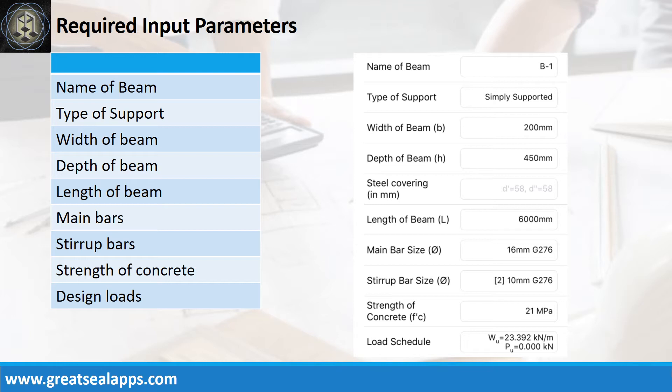Enumerate input parameters required. Name of beam: B1. Type of support: simply supported. Width of beam: 200 mm. Depth of beam: 450 mm. Length of beam: 6000 mm. Main bars: 16 mm bar at grade 276. Stirrup bars: 10 mm bar at grade 276. Strength of concrete: 21 MPa. Factored uniform load: 23.392 kN per meter.